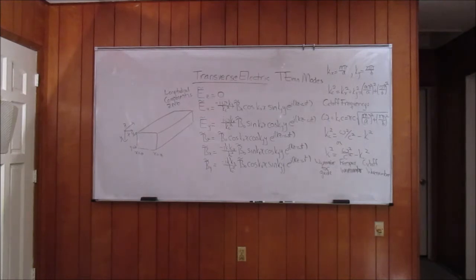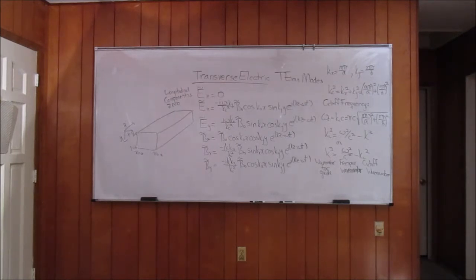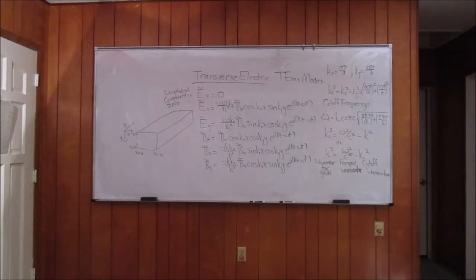No transverse electromagnetic mode exists for hollow conducting waveguides. Either the magnetic field or the electric field has a longitudinal component. In the case of transverse electric modes — what you see on the board right now — the longitudinal component of the electric field vanishes, but the longitudinal component of the magnetic field does not. In the case of transverse magnetic modes, the longitudinal component of the magnetic field vanishes, but the longitudinal component of the electric field does not.